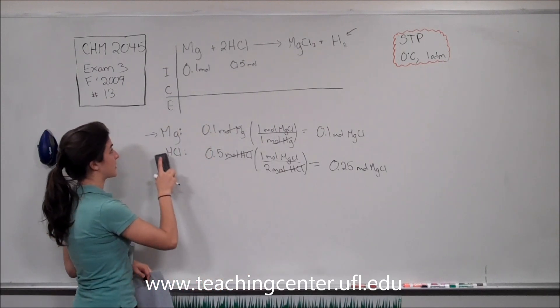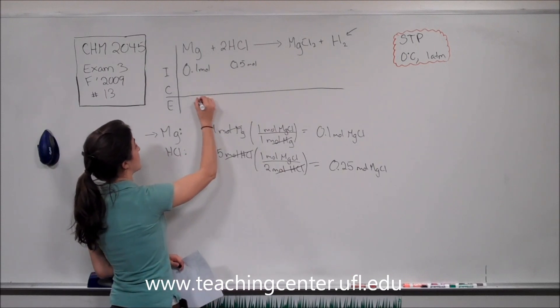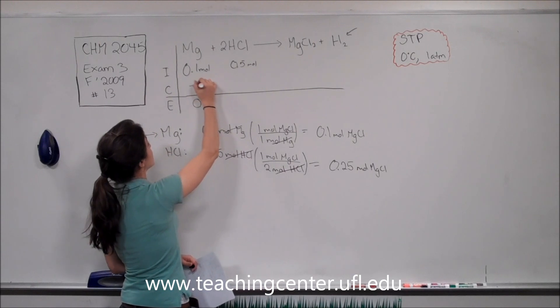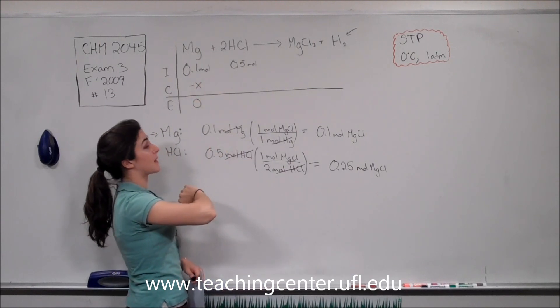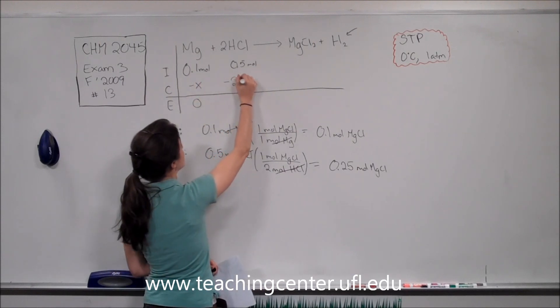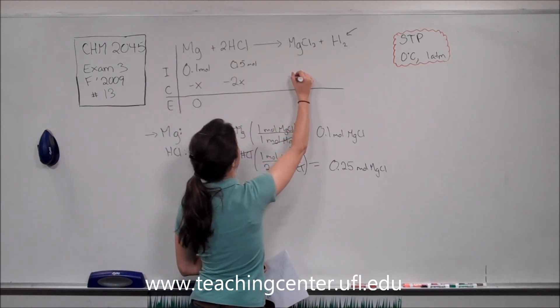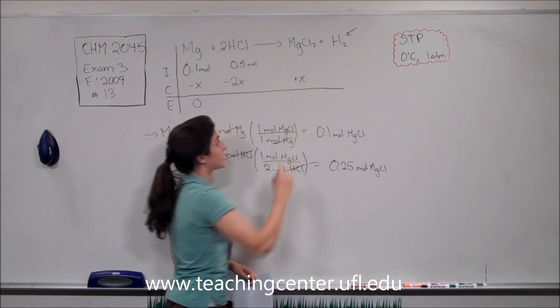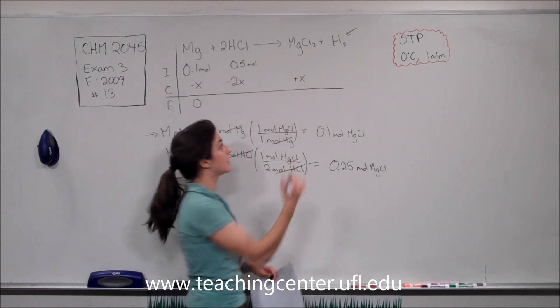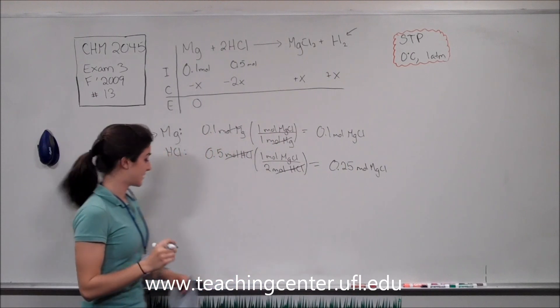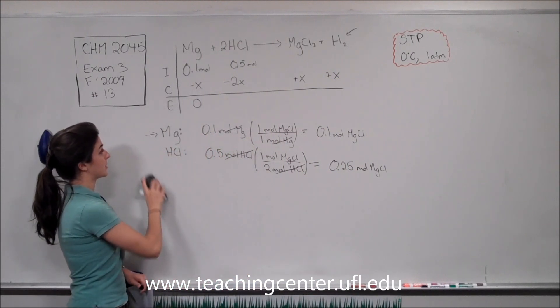So now, now that we know this, we see that magnesium is going to be used up at the end, so there's going to be 0 left. We use an X amount of magnesium, two equivalent amounts of hydrogen chloride, and this produces one equivalent amount of magnesium chloride, and one equivalent amount of the hydrogen gas.